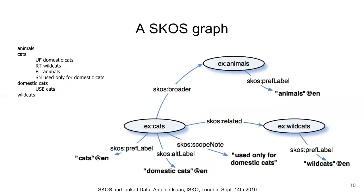SKOS expresses the types of hierarchical and associative relationships found in a traditional thesaurus. Animals is a broader concept to cats and wild cats is related to cats. Here we see the original thesaurus extract and SKOS version together — the SKOS concepts, their labels, relationships and documentation. In SKOS terms, a vocabulary is a concept scheme: an aggregation of interrelated concepts. Two properties from the SKOS core specification which support the expression of a relationship between a concept and a concept scheme are SKOS in-scheme and SKOS has-top-concept, providing a means of asserting that a concept is contained within a concept scheme.